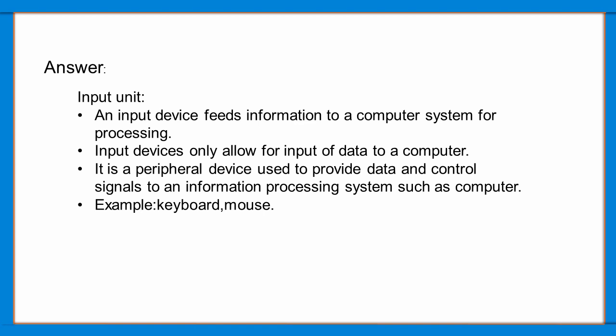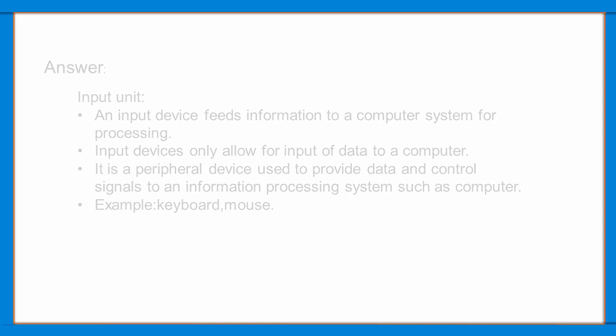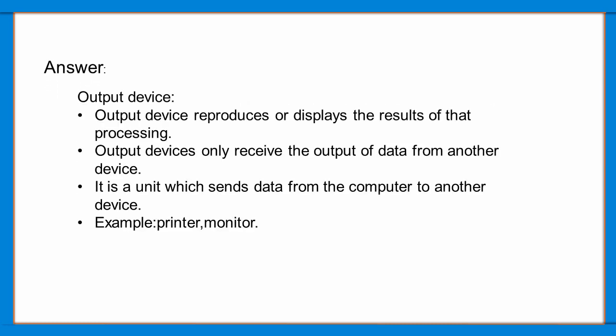Examples of input devices include the keyboard and mouse. An output device is any piece of computer hardware equipment which converts information into human-readable form. Examples of output devices include the printer and monitor.